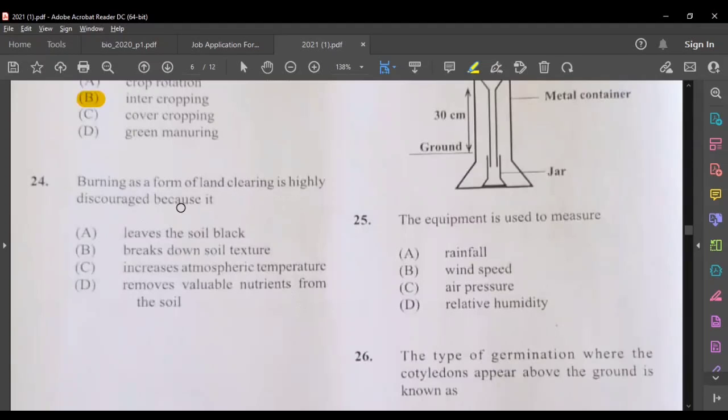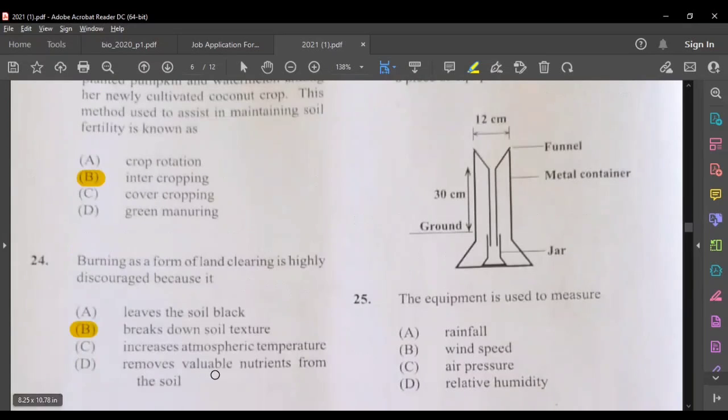Question 24, burning as a form of land clearing is highly discouraged because it leaves the soil black, breaks down soil texture, increase atmospheric temperature, remove valuable nutrients from the soil. The most suitable answer here would be D. As for removing valuable nutrients, when the ash would contain some form of nutrients, so I don't think that D would be the most suitable answer here.